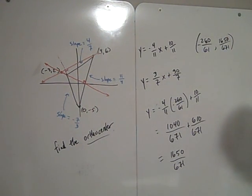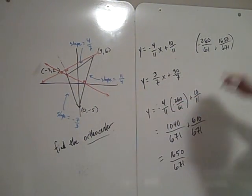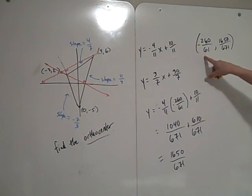Let me double check that real quick. Yup, that's right. The coordinates of the orthocenter for this triangle is the x value is negative 260 over 61. The y value is 1650 over 671.